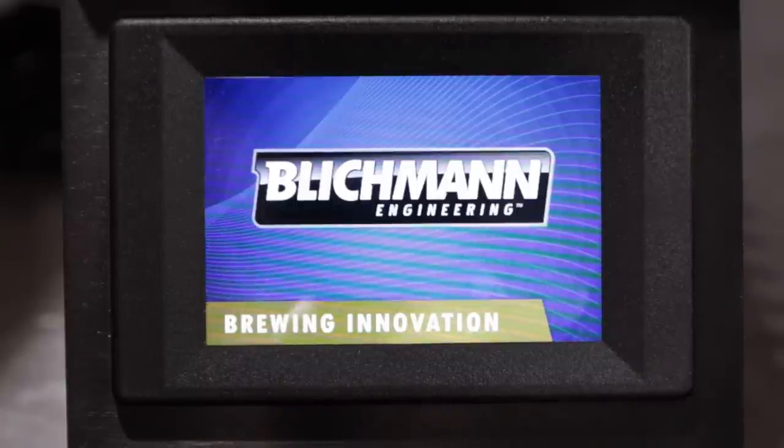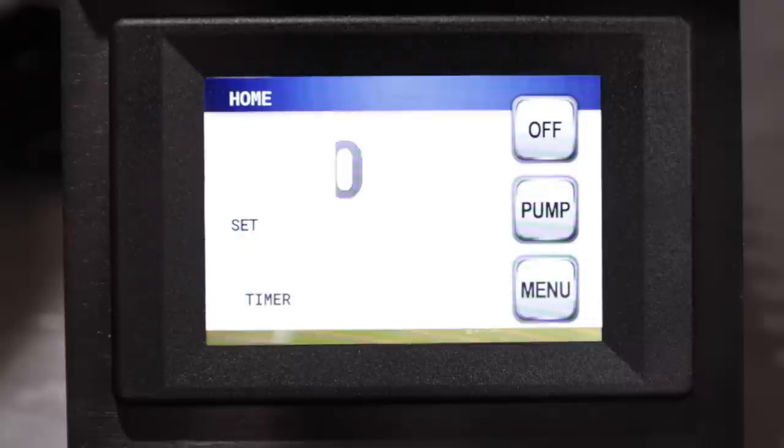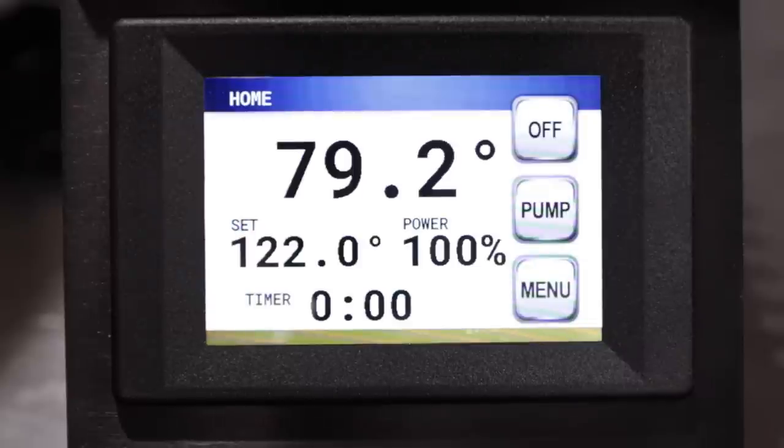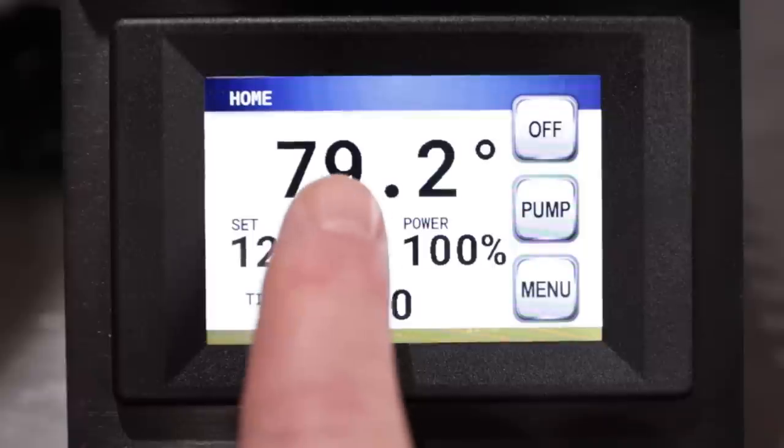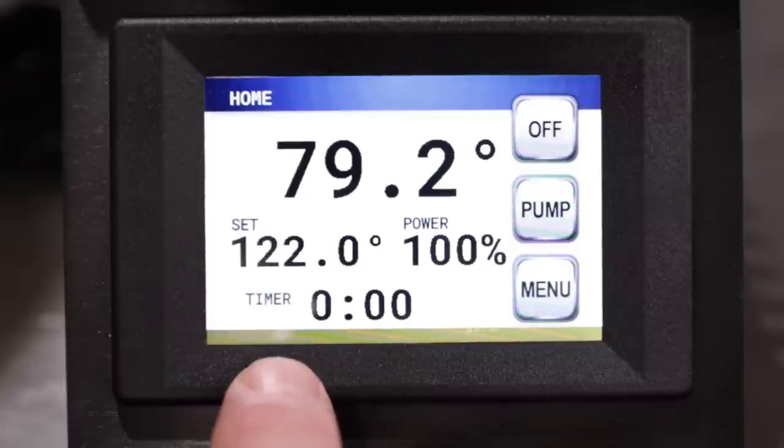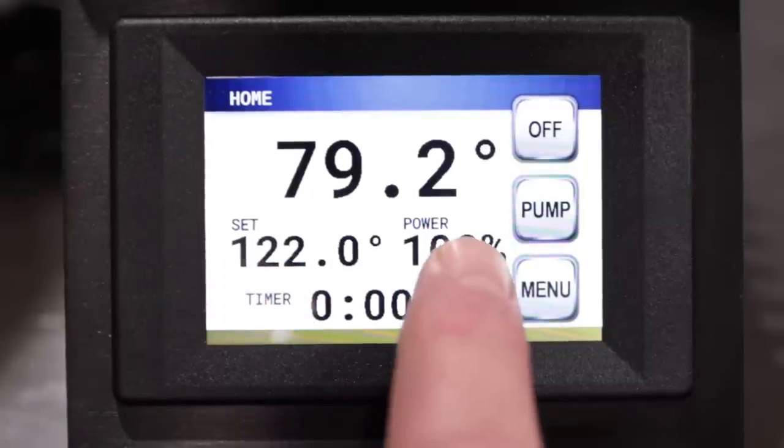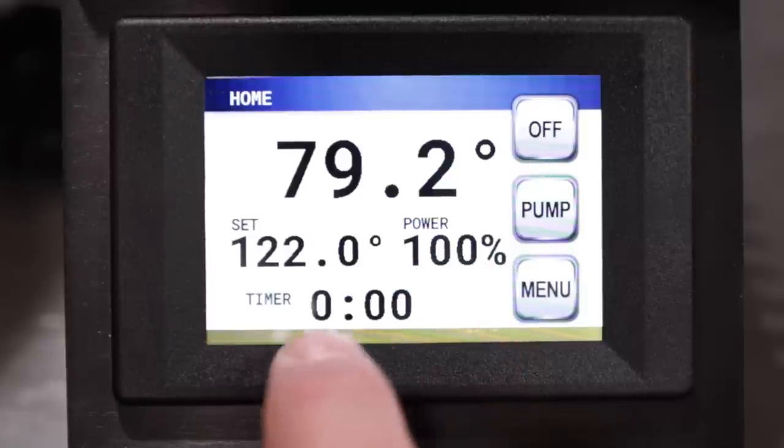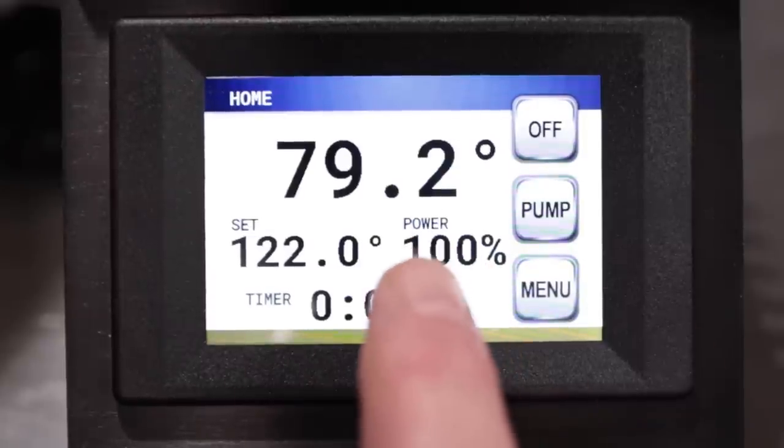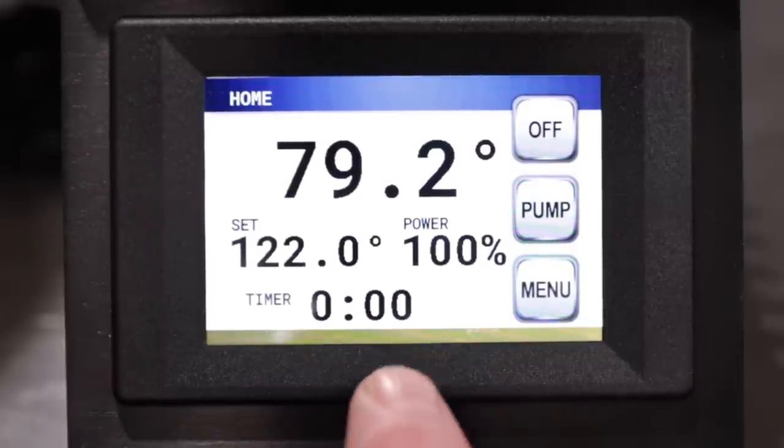Alright, so let's go ahead and turn the unit on and you get a couple audible beeps. Brew Commander, let's get brewing, and now it brings you to the home screen. You can see the current water temperature is 79.2 degrees. The set point is currently at 122. Power is at 100 percent and the timer is at zero.